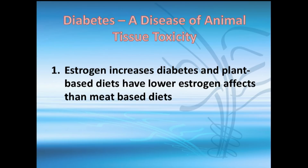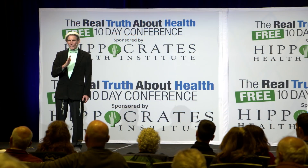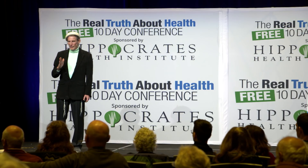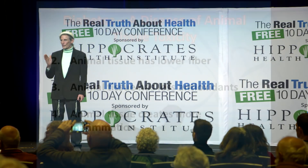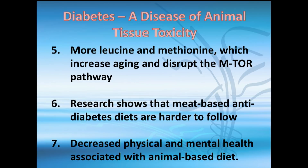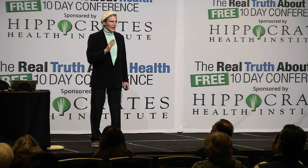Returning to the estrogen factor: animal tissues with lower fiber contribute to higher estrogen, and animal tissues have fewer antioxidants — in fact, they are more oxidative. That leads to more inflammation from animal flesh. Plant-based diets really are healthier and far more diabetes-protective, with phytonutrients providing key benefits.